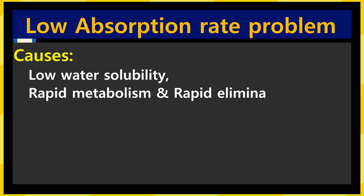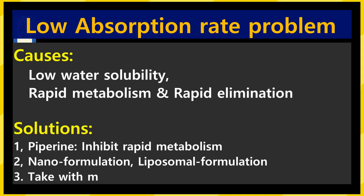The reason for the low absorption rate of curcumin is that it does not dissolve well in water. Additionally, after taking it, the metabolism is fast and it is excreted quickly from the body. To solve these problems: 1. To slow down the metabolic rate, mix with other substances like piperine from black pepper. 2. Bind the curcumin molecule with lipid molecules, make nanoparticle curcumin, or take curcumin together with a fatty meal to increase the absorption rate.